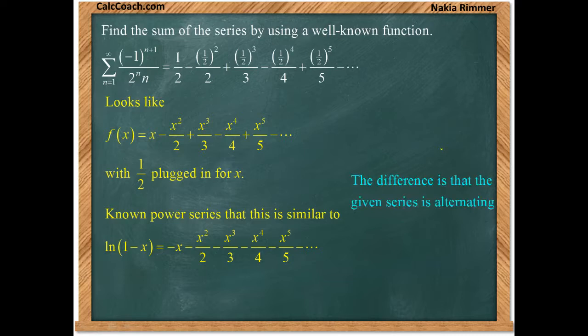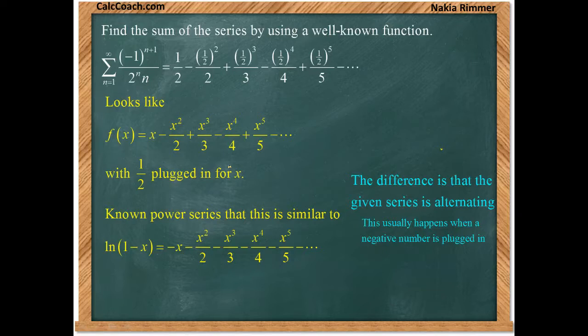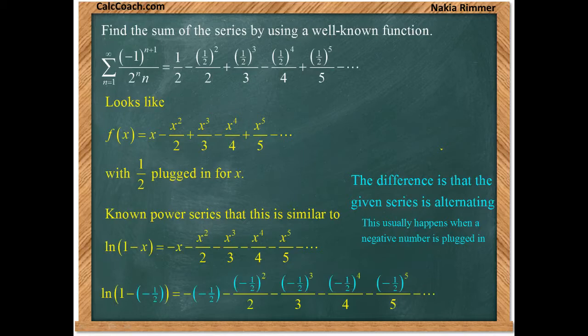The difference is that the given series is alternating and the one from our known table of power series is not. This usually happens when we have a negative number plugged in for x. And so we have a negative one half plugged into this series.